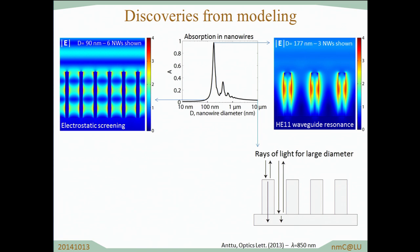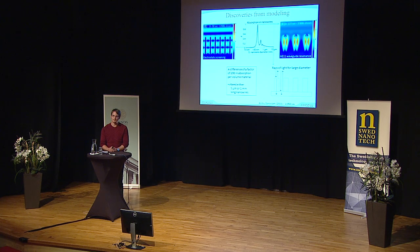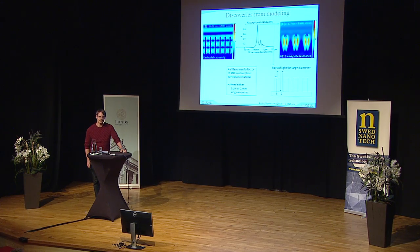Here we have exactly the right size of nanowires to couple light in maximally. When we check this analysis, we find that at this resonance compared to the case of small diameter nanowires, the absorption per unit volume varies by a factor of 200. This means the difference between needing, for example, five micrometer long nanowires or one millimeter long nanowires to get the same absorption. So if you end up in the wrong case, your solar cell will absorb poorly. The modeling here is absolutely necessary to know what you should aim for in successful applications.